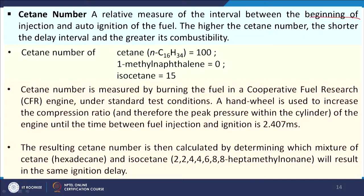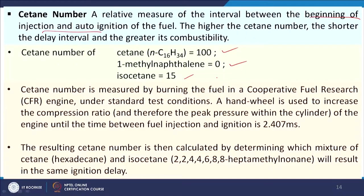Then we come to cetane number. Cetane number is the property of diesel — it is a relative measure of the interval between the beginning of injection and auto-ignition. The shorter this delay, the better the fuel. Like octane number, there are two reference compounds: cetane has a rating of 100, 1-methyl naphthalene is 0, and iso-octane is 15. Blending with different ratios and using in a specified machine, we measure the delay period, and the percentage of cetane in the matching blend is the cetane number.